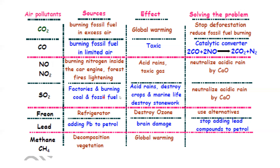Sulfur dioxide is produced by factories and the burning of fossil fuels. It can cause acid rain and can destroy marine life, plants, crops, and stonework. It can also be neutralized by calcium oxide. Freon gas, also known as chlorofluorocarbons (CFCs), is used as a coolant in refrigerators and air conditioners. It can destroy the ozone layer in the upper atmosphere, which protects us from harmful ultraviolet radiation. We should use alternatives such as hydrofluorocarbons (HCFCs) instead of CFCs.